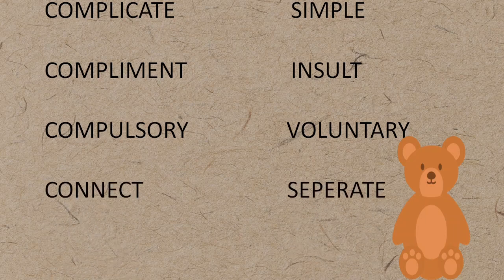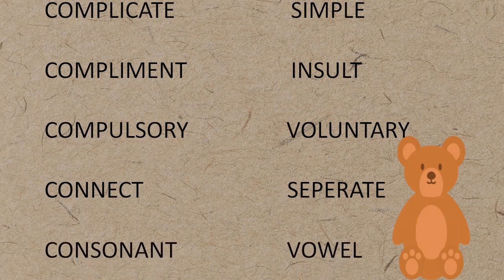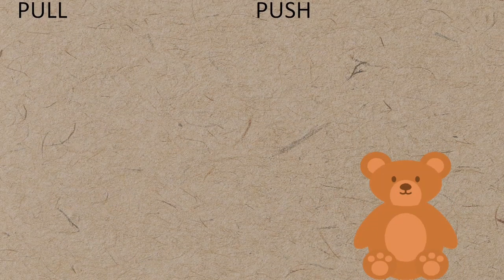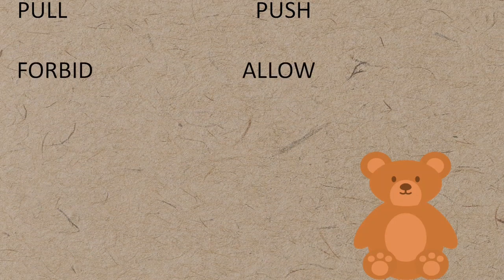'Connect' (जोड़ना) — opposite: 'separate' (अलग करना). 'Consonant' (व्यंजन) — opposite: 'vowel' (स्वर). 'Pull' (खींचना) — opposite: 'push' (धक्का देना). 'Forbid' (मना करना) — opposite: 'allow' (आज्ञा देना / हाँ करना).